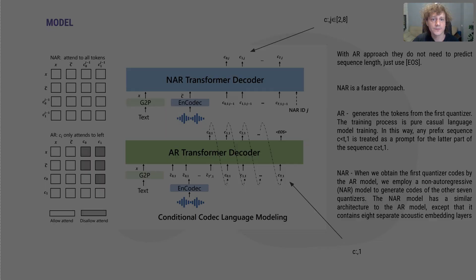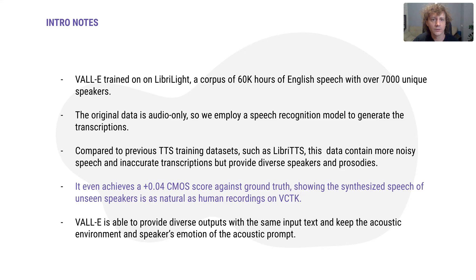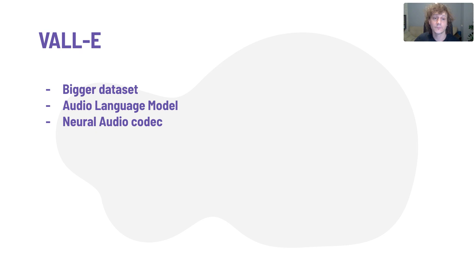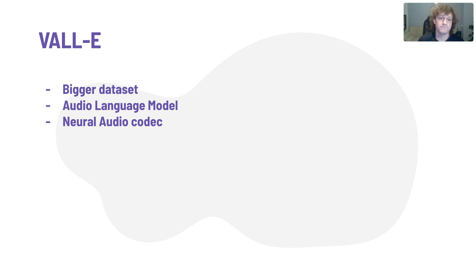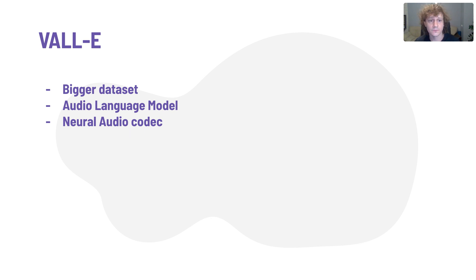The dataset is available and open since it comes from another work — authors preprocessed an existing dataset rather than collecting their own. The audio language model is not available; they don't provide code or pre-trained weights. But the neural audio codec model is also available, pre-trained, and you can use it. There are some attempts on GitHub to replicate this model — the code doesn't look that scary. Thank you for watching, I hope it was useful.